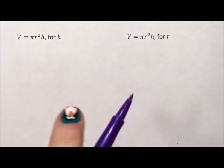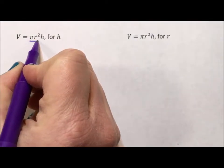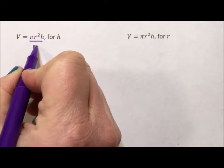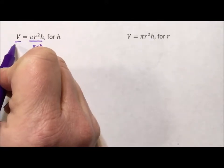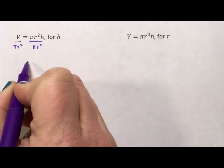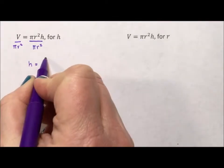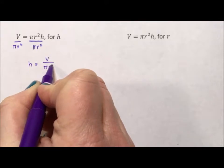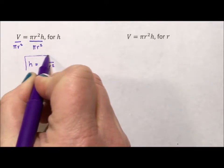In both of these cases, my first step is simply going to be to divide. For the first one, I'm going to divide by all of the pi and the r squared. I don't need to do this in two steps. I'm going to flip it around so my h is on the left, so that h equals the volume divided by pi r squared. And this will be done for this problem.